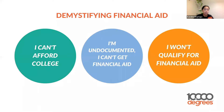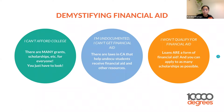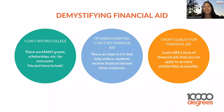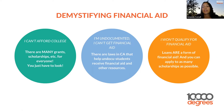Some things that turn students away from applying for financial aid are: 'I can't afford college,' 'I'm undocumented and can't get financial aid,' and 'I won't qualify.' These are all myths. There are many grants, scholarships, and loans everyone can receive. California has laws that help undocumented students receive financial aid. And even if you don't qualify for other aid types, you may qualify for a loan. There's also no limit on scholarships you can apply for.